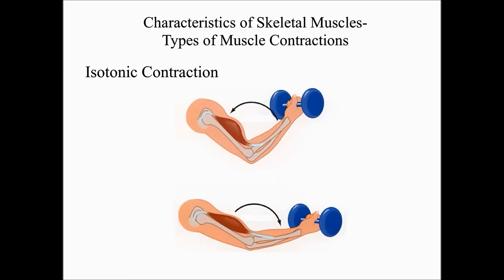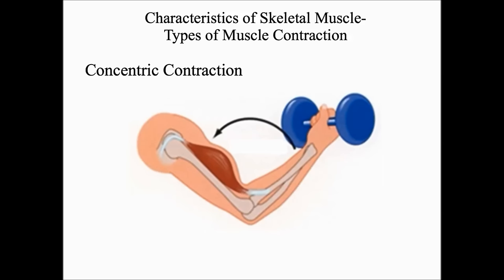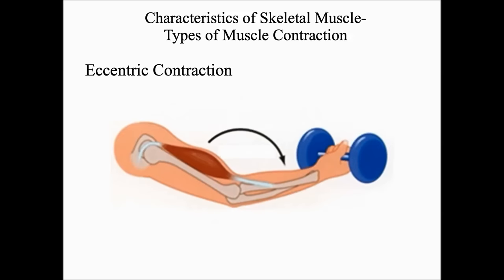The first type of isotonic contraction is a concentric contraction — the tension in the muscle increases while the length of the muscle decreases. The last type of isotonic contraction is the eccentric contraction, during which the tension in the muscle increases while the length of the muscle also increases.